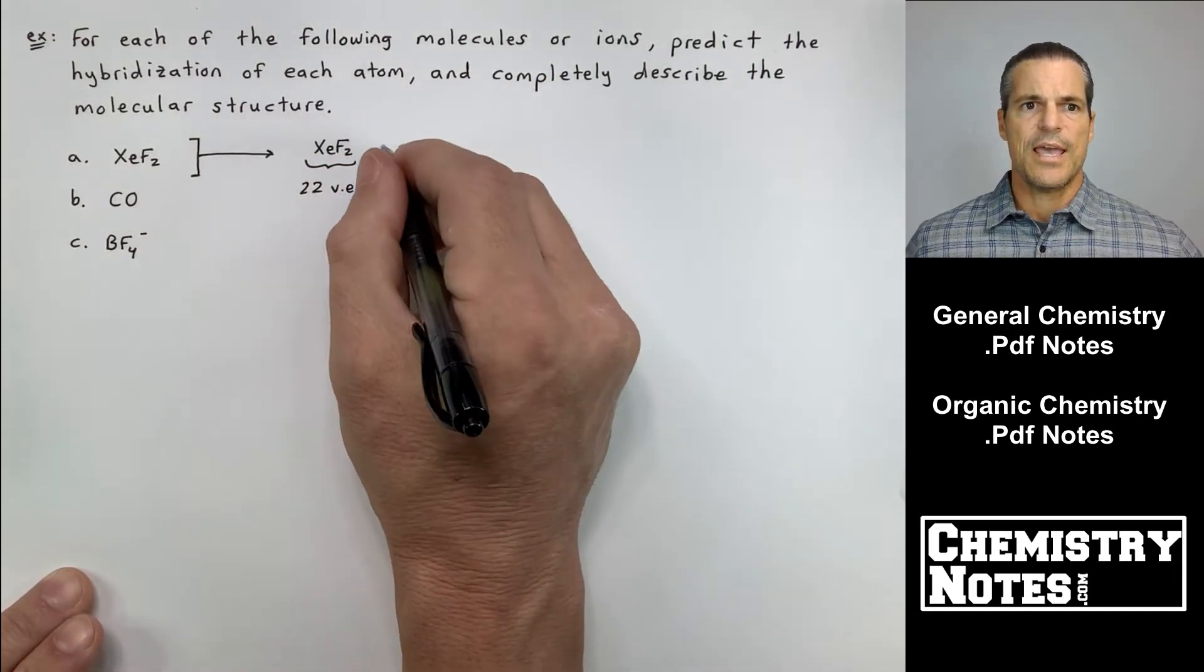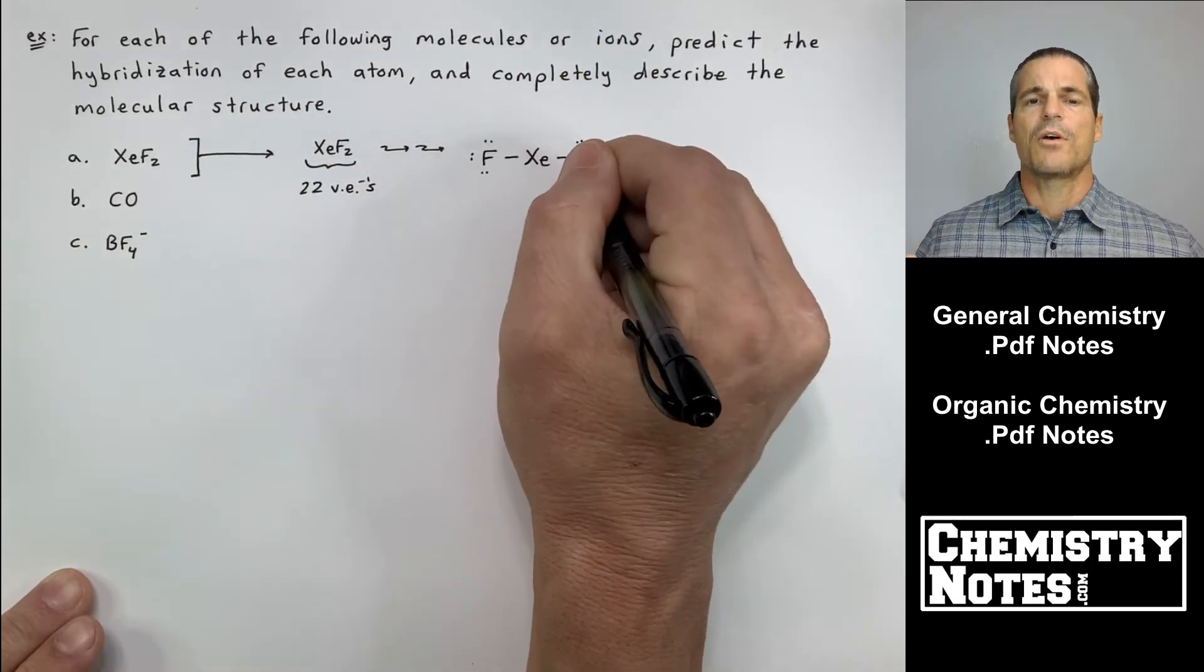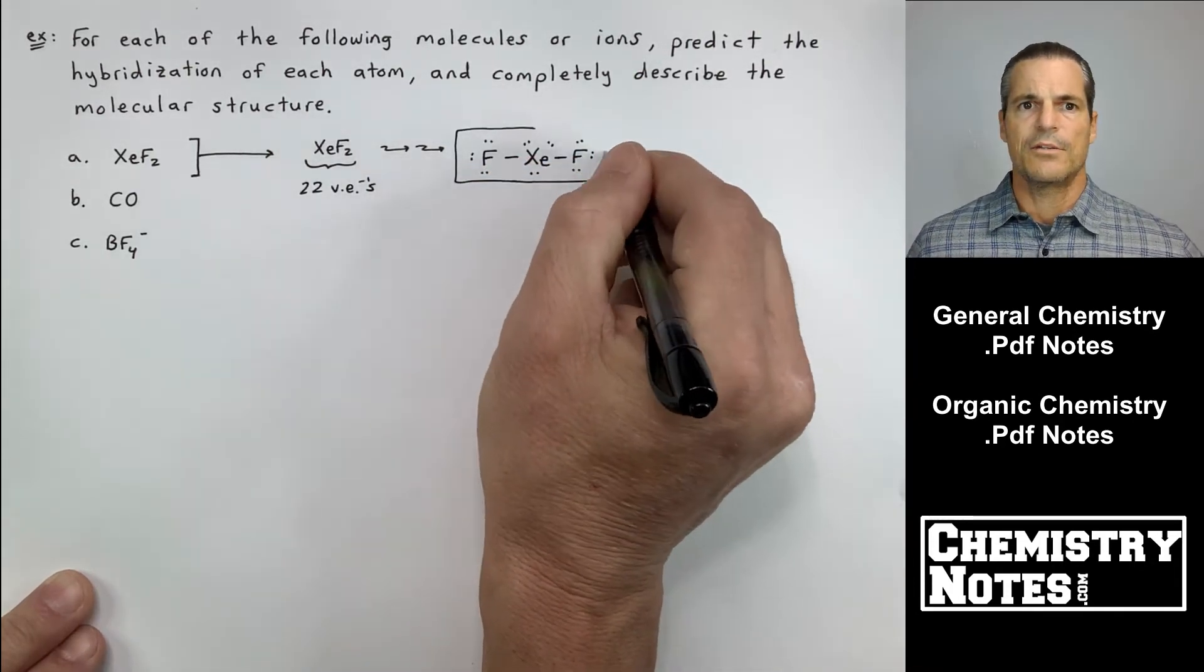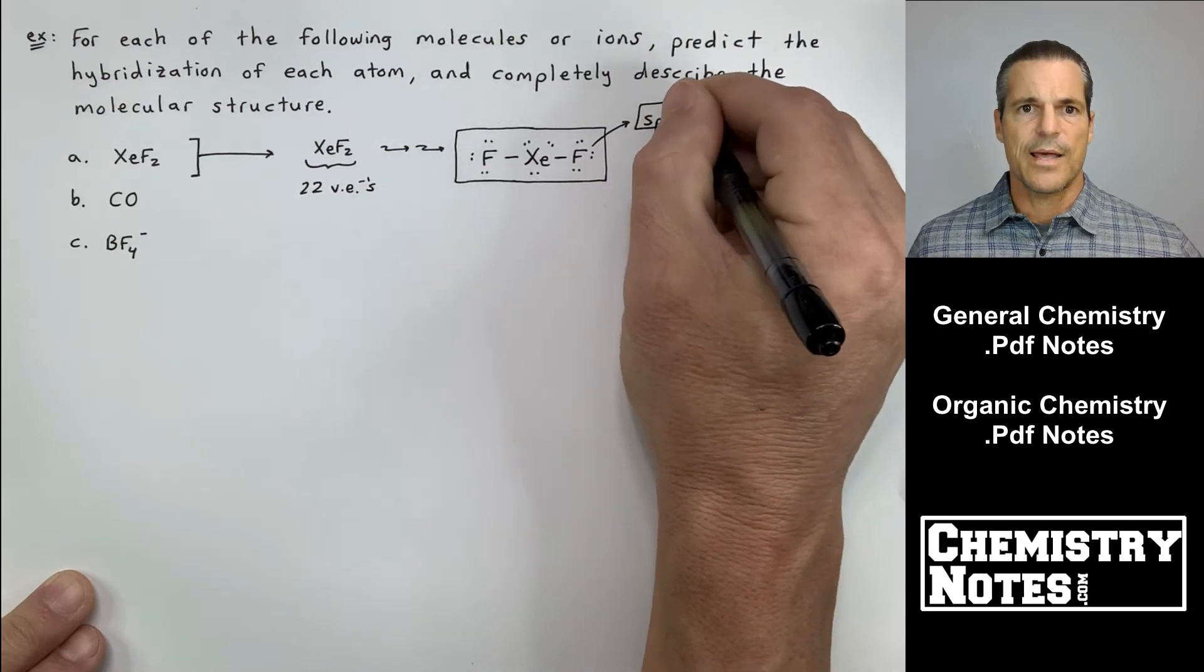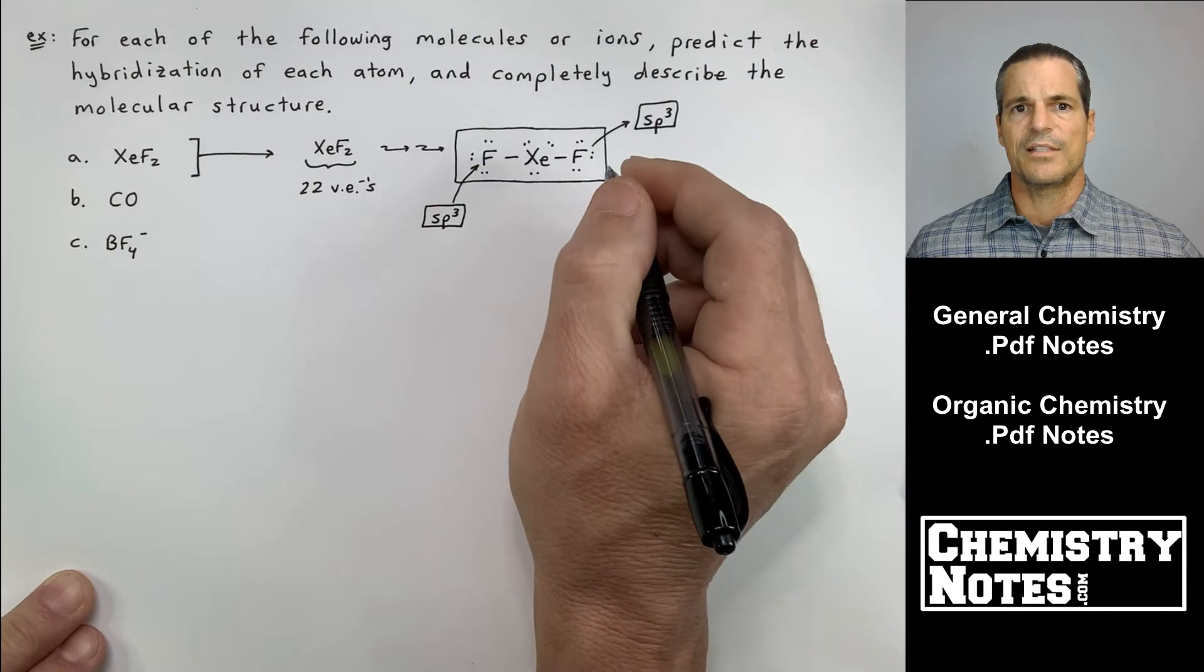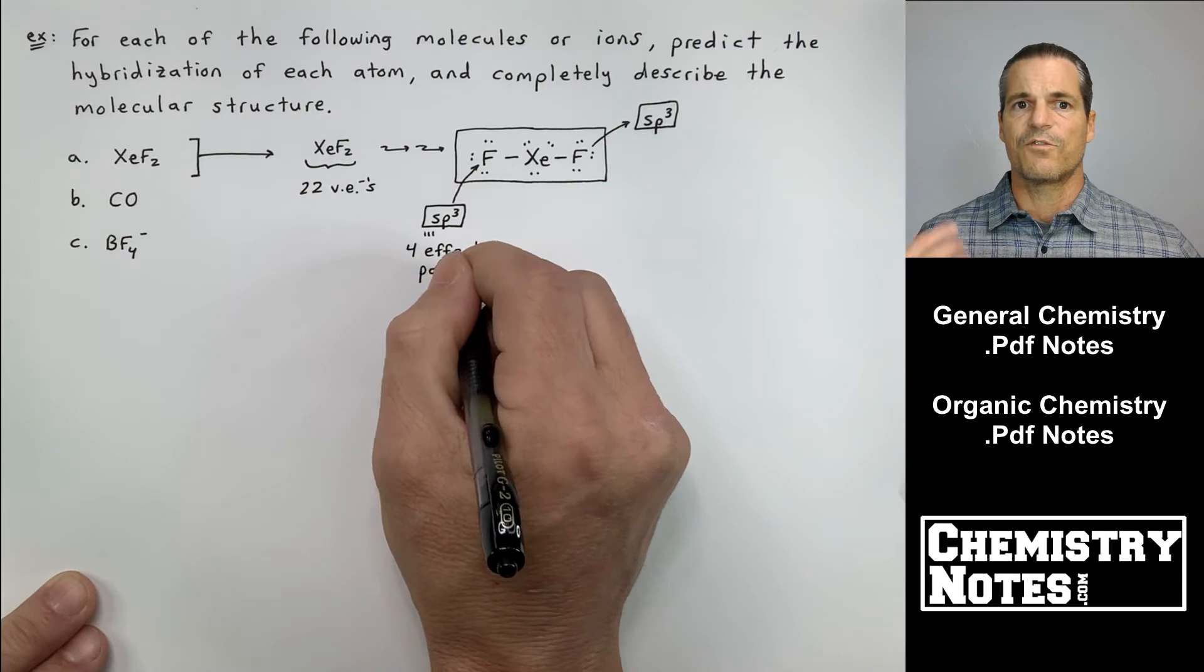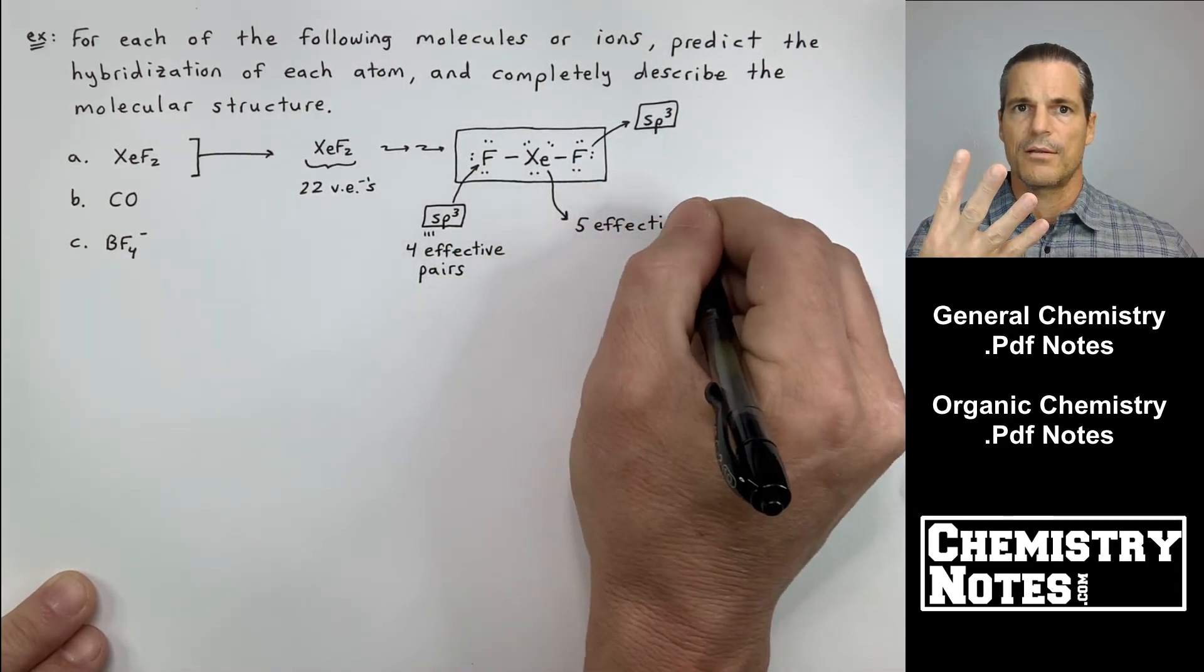So A, XeF2, 22 valence electrons. The little arrows there means I'm going through the process of how to draw the Lewis structure properly. I don't just throw an XeF2 together, satisfy octets. I got to have 22 valence electrons and there are rules. So I end up with the exact same formation I had for I3 minus really. So the F on the outside has four effective pairs. S, P1, P2, P3, right?